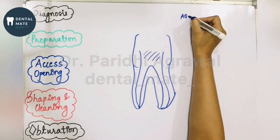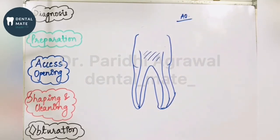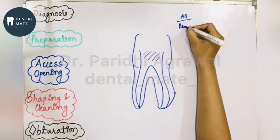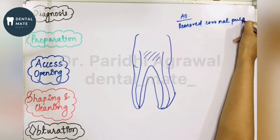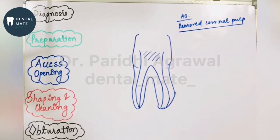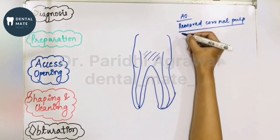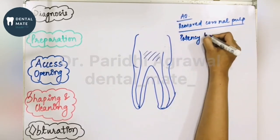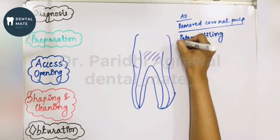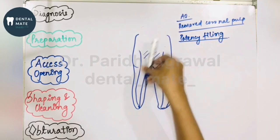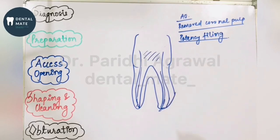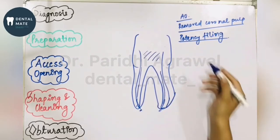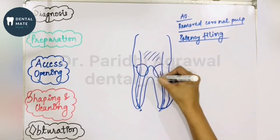After removal of the coronal pulp, you will do patency filing. Patency filing means you simply put a file in the canal and check whether a straight-line access can be created. Once complete patency is achieved — meaning the file is going to the apex — you then do the enlargement of the coronal portion of the root, known as coronal third enlargement.